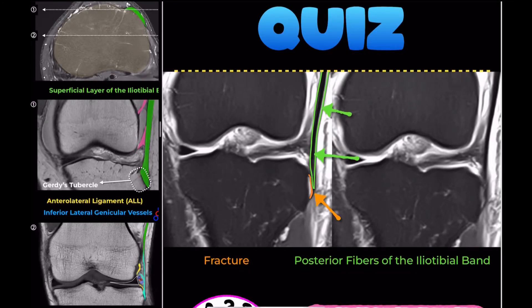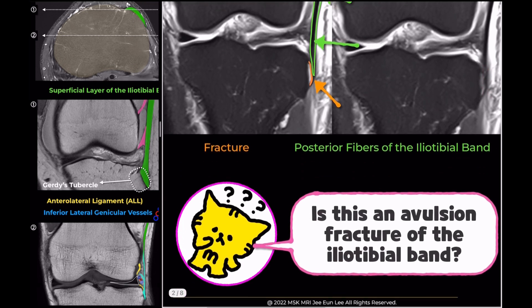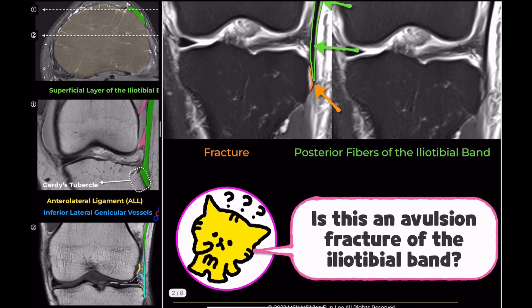The area highlighted in green represents the iliotibial band. There is an avulsion fracture at its attachment site. So the question arises: should we call this an iliotibial band avulsion fracture?